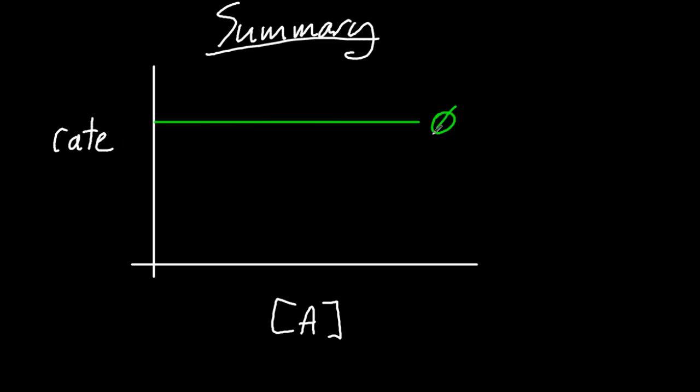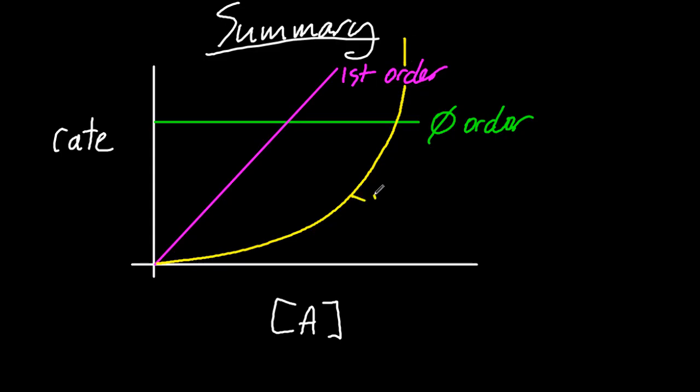A quick summary of those three graphs. Rate against A. There's the horizontal one, the zero order. The one that goes through zero, zero, like that, is first order. And the one with a changing gradient is second order.